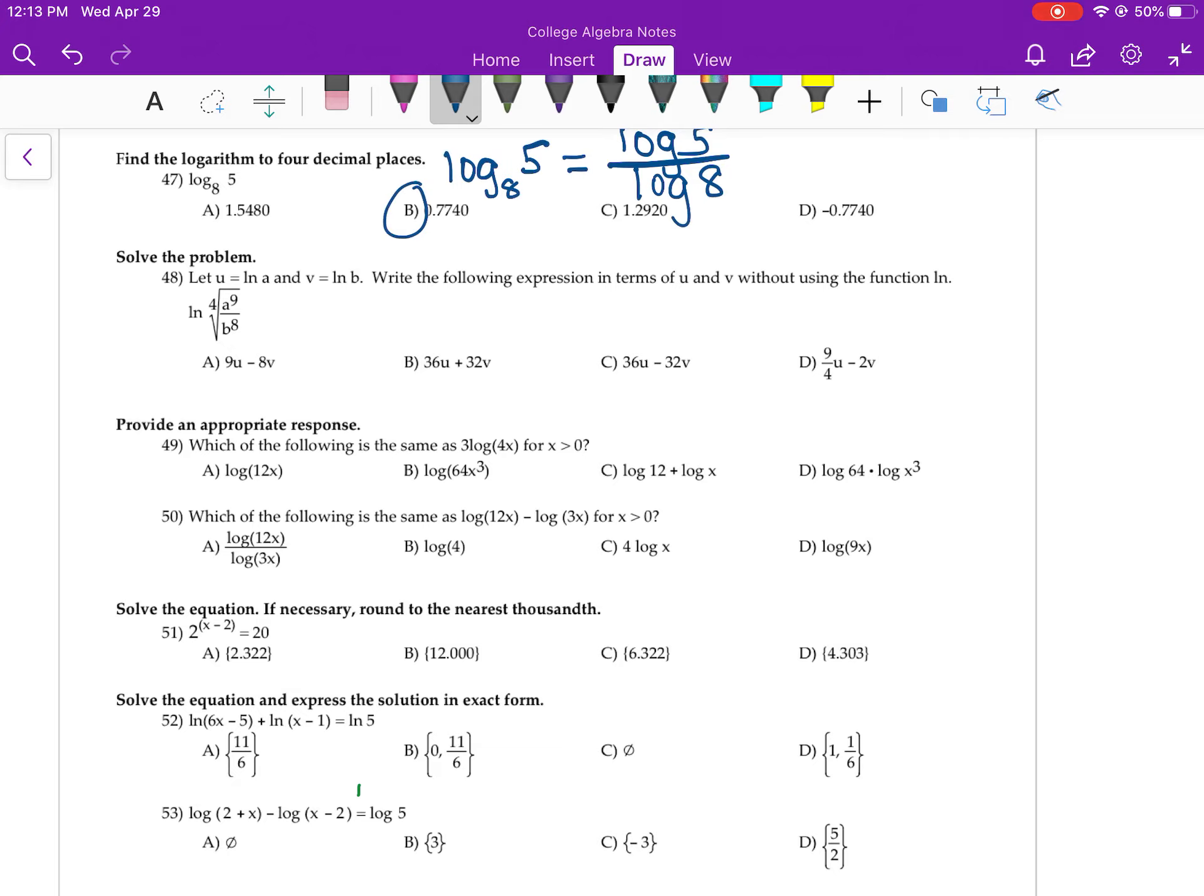48. Take it apart first. Move your exponents to the front. Plug in U for the ln of A and V for the ln of B. And 48 should be D.